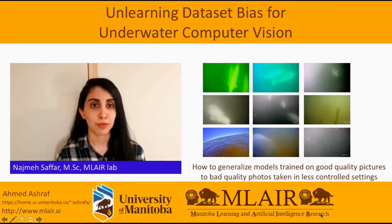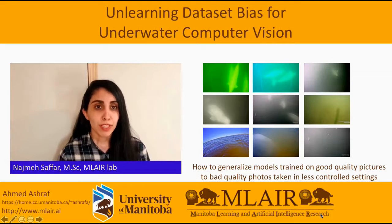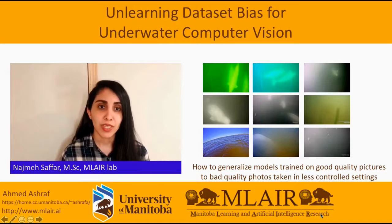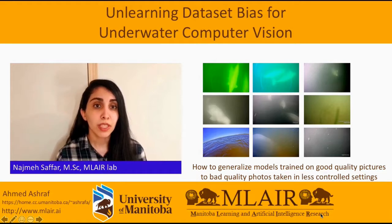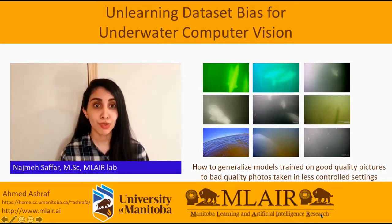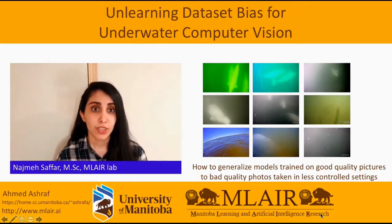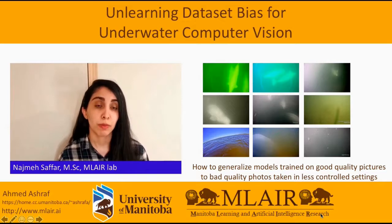Hi, my name is Najmes Akbar. I'm a student in the Manitoba Learning and AI Research Lab in the ECE department. My research is related to developing new learning methods for cross-dataset generalization. Even though recent advances in AI and deep learning have increased our capability to solve problems in a variety of domains, generalizing trained models to a different dataset from the training set still remains a problem. So I take a different approach to cross-dataset generalization by learning a representation which suppresses dataset-specific information while allowing classification, so the focus is more on our variable of interest.